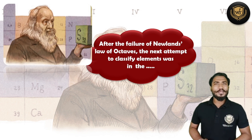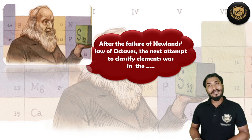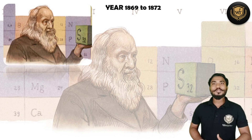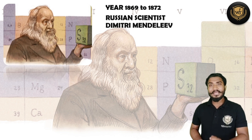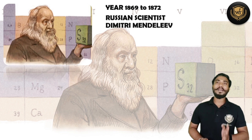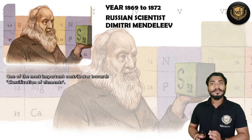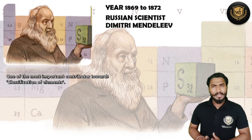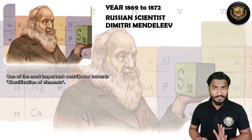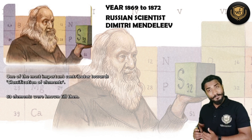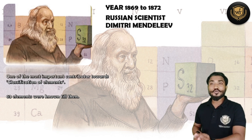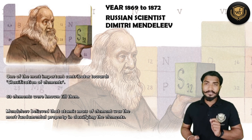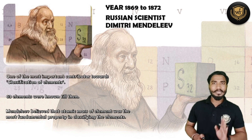After the failure of Newlands' Law of Octaves, the next attempt to classify the elements was done in the year 1869. It was done by a wonderful personality — Dmitri Ivanovich Mendeleev. Mendeleev was one of the most important contributors in the classification of elements. During the time of Newlands there were 56 elements, while during the time of Mendeleev there were 63 elements known.